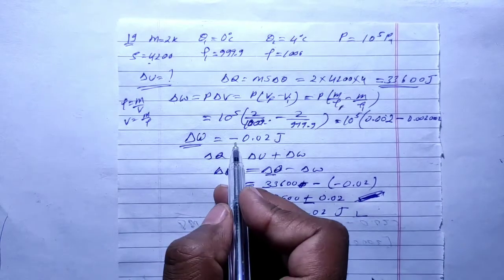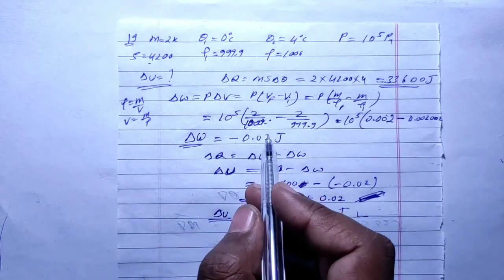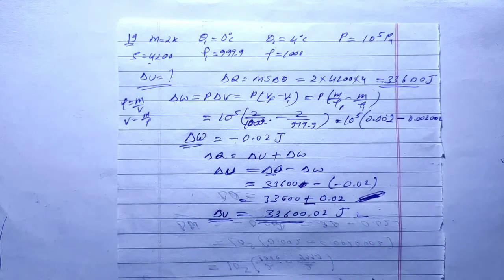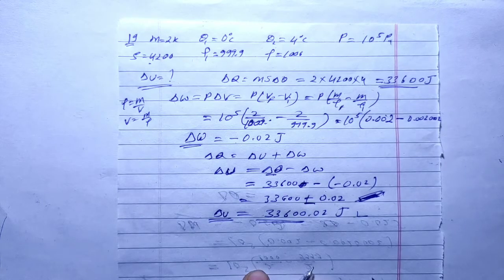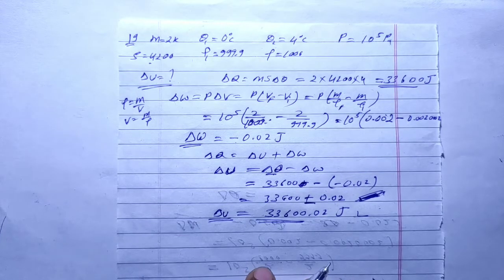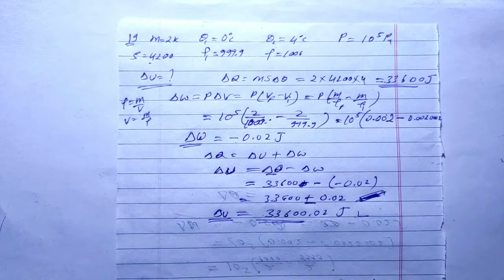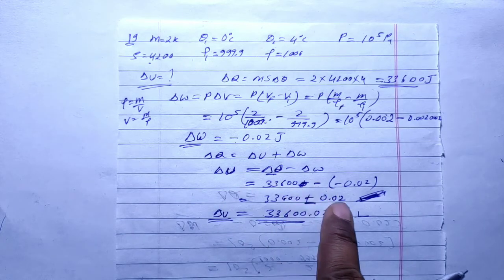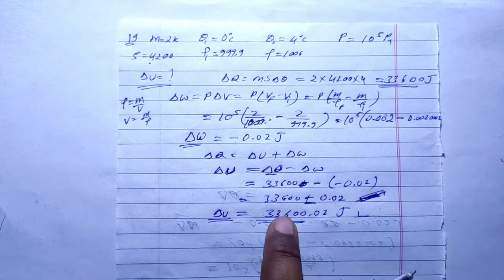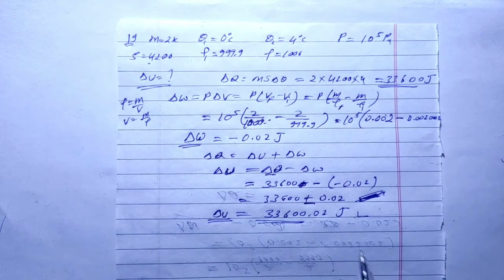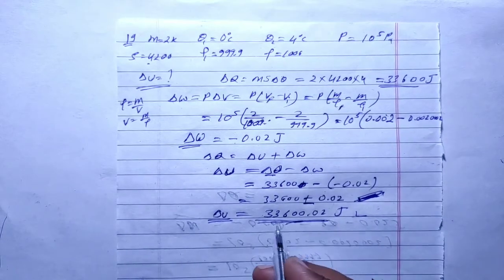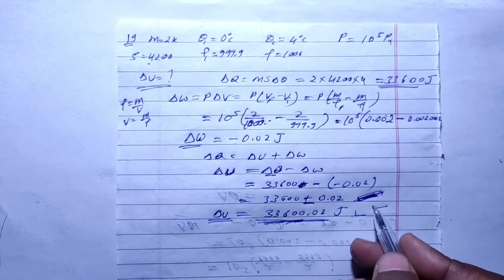The work done is negative because the volume decreases. At 4°C, the density of water is more than at 0°C, meaning the volume at 4°C is less than at 0°C. When volume decreases, the work done is negative. Since work done is negative, subtracting a negative gives a positive addition to internal energy — that is why ΔU is slightly more than Q. This confirms our concept is correct.